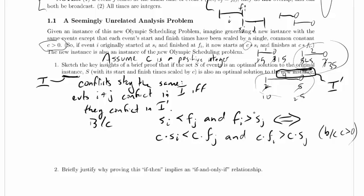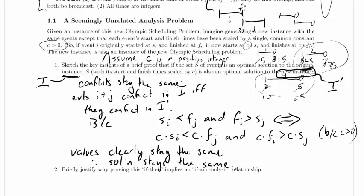So anytime that these two things are true, these two things are true, and anytime that these two things are true, these two things are true. And that establishes this if and only if relationship, which means the conflicts stay the same. So the conflicts stay the same, the values clearly stay the same. There's nothing more to say there, we just didn't change the values. And therefore, the solution stays the same. So those are the key points of a proof. That's not a complete proof, but that's what really matters.